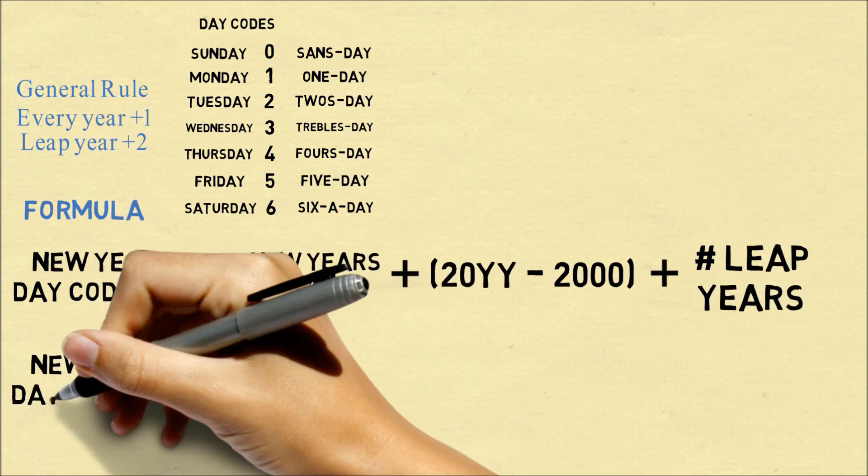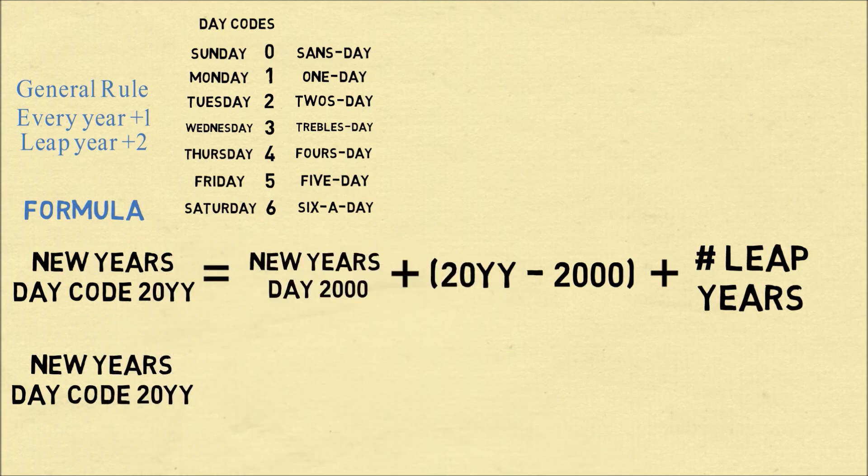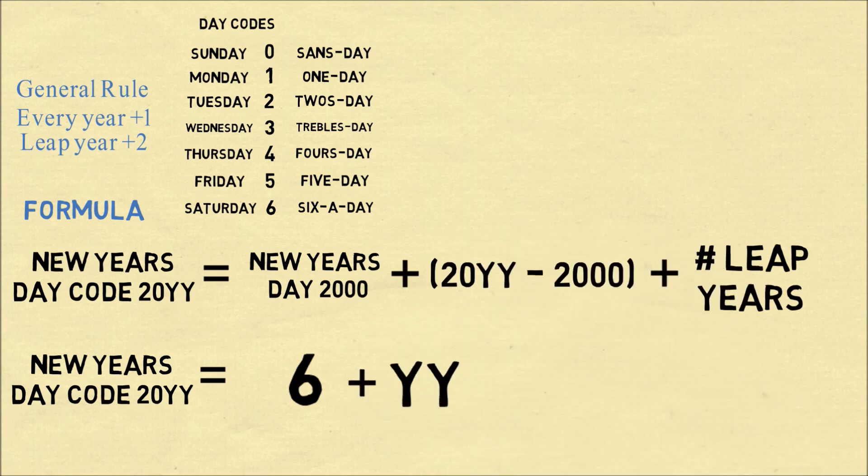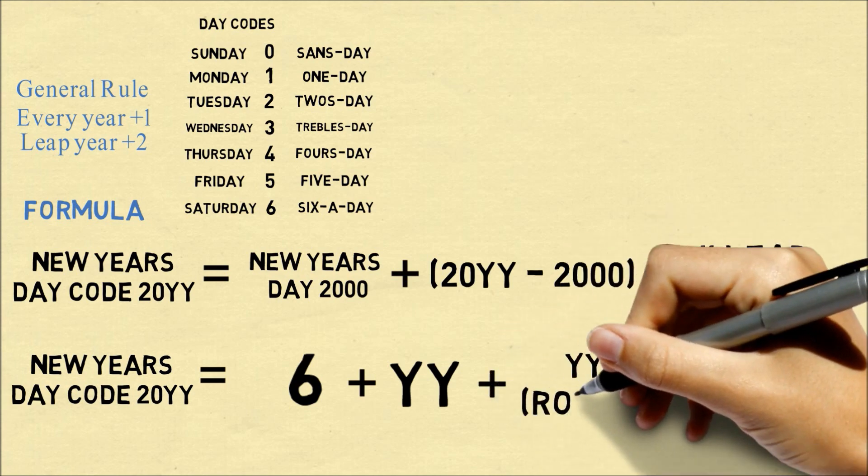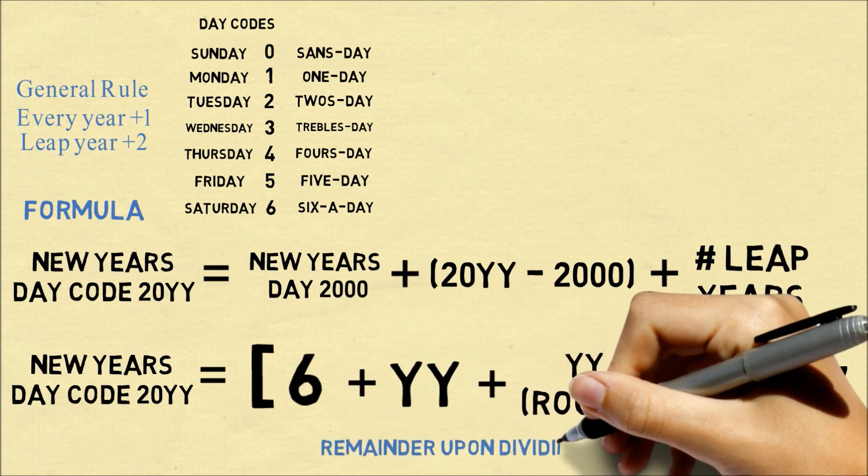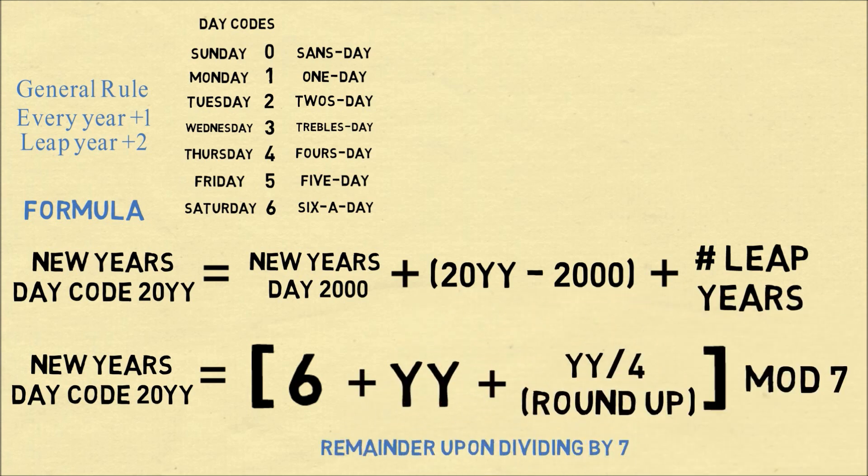So we can simplify this formula. In 2000 we know the New Year started on a Saturday, which is a six. 20YY minus 2000 will just be YY. And the number of leap years can be found by dividing YY divided by four and rounding it up, because 2000 was also a leap year. So in order to convert this into a day code, we want to take this modulo seven. In other words, we take the remainder upon dividing by seven, because we want the number to be between zero and six.